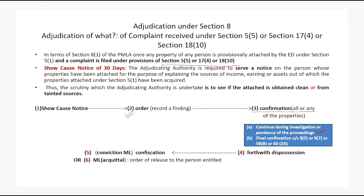For the final confiscation order — if the person is convicted by the trial court under the offence of money laundering, the property stands confiscated in the name of the central government under Section 8(5) and Section 8(7). When properties have been taken outside the country, letters of request — also known as letter rogatories — are filed before the corresponding state. Once the confirmation order is passed, under subsection 4 the enforcement directorate shall forthwith take possession of the attached property.